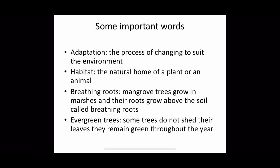We have almost finished the chapter on adaptation of plants. Now the most important thing — some key definitions. Adaptation: the process of changing to suit the environment is called adaptation. Habitat: the natural home of a plant or an animal. Breathing roots: mangrove trees grow in marshes and their roots grow above the soil — these are called breathing roots.